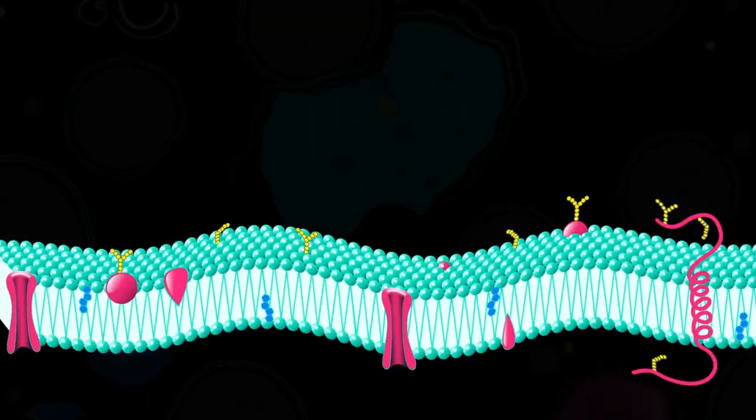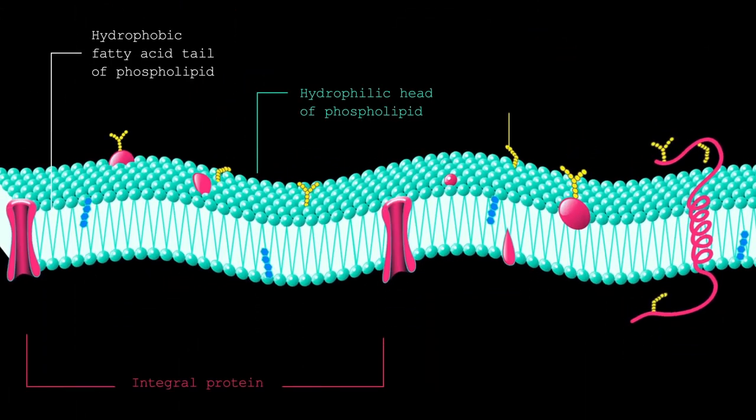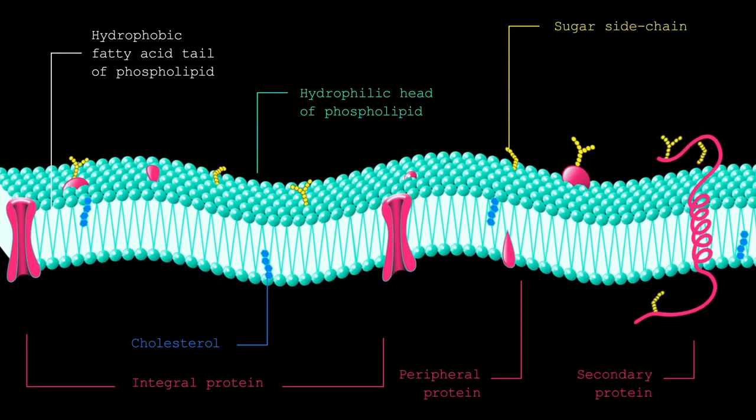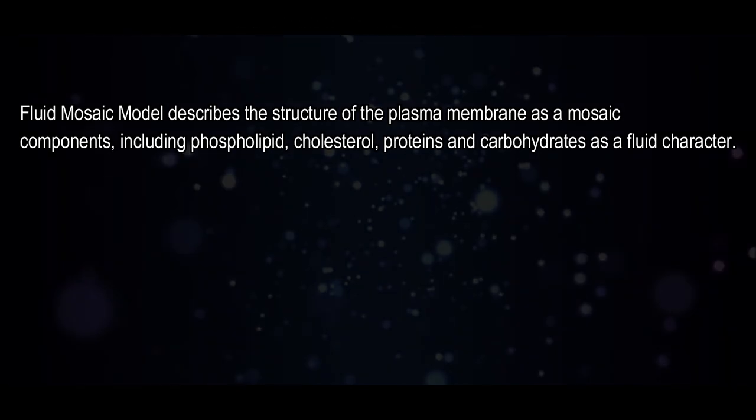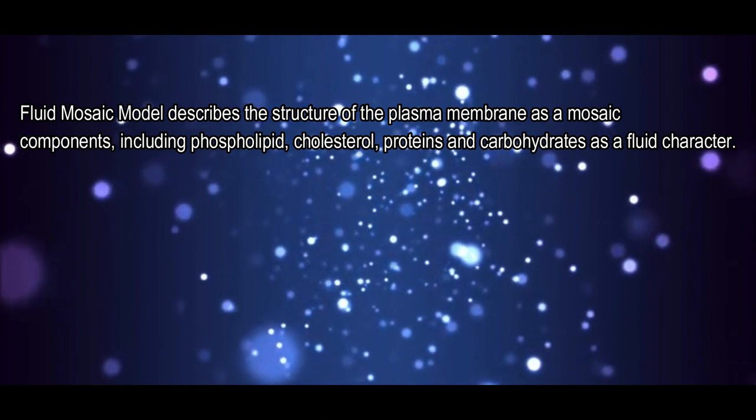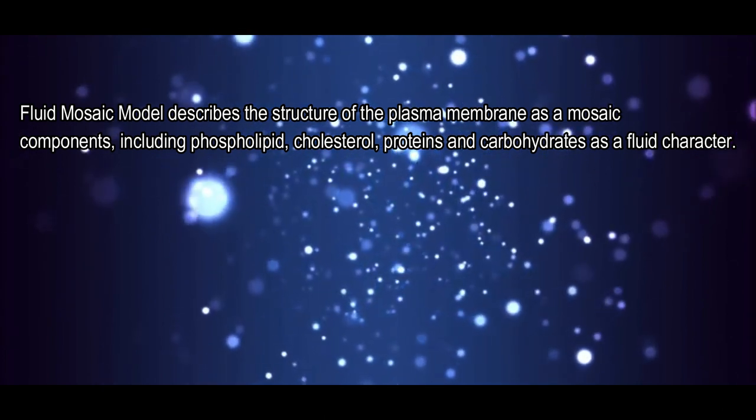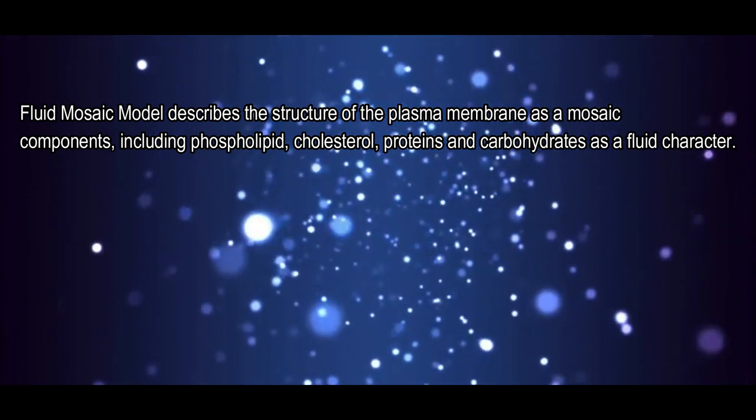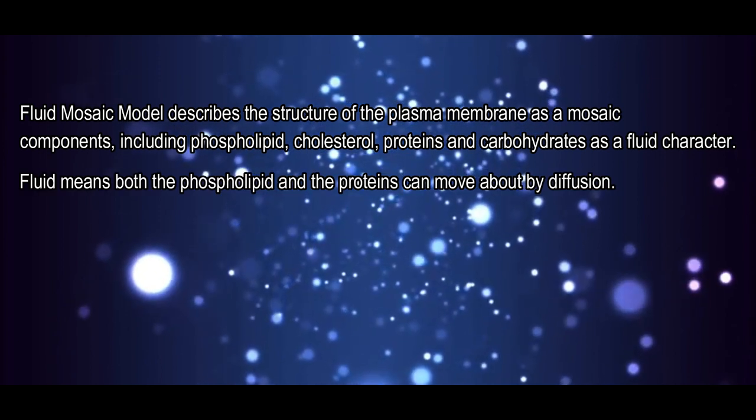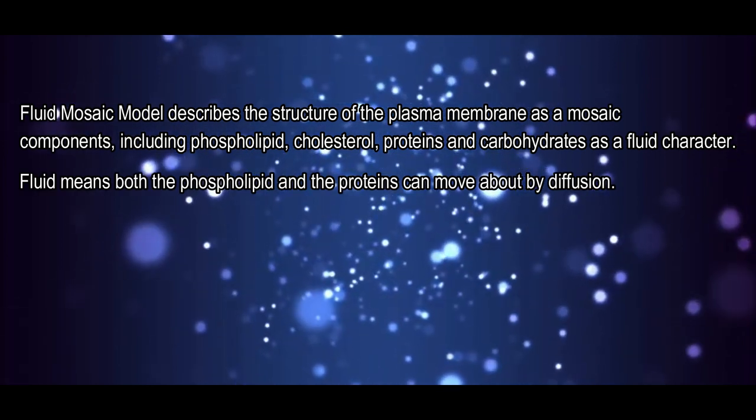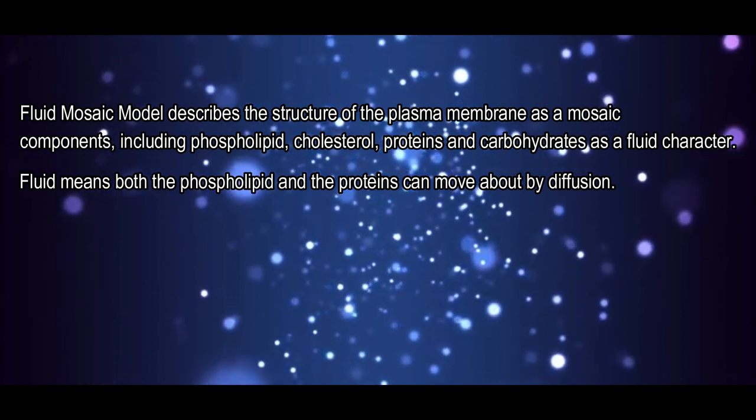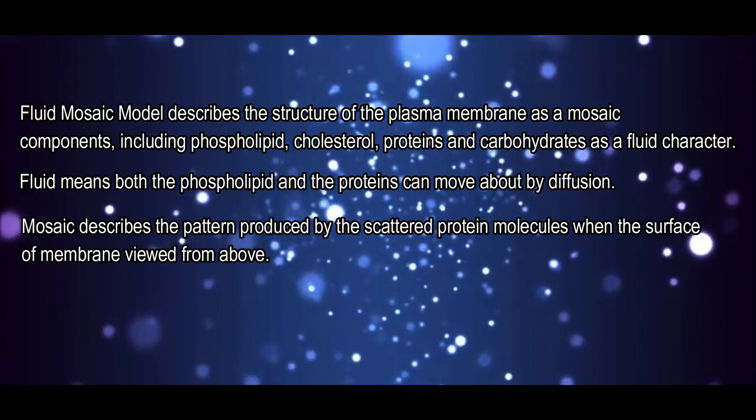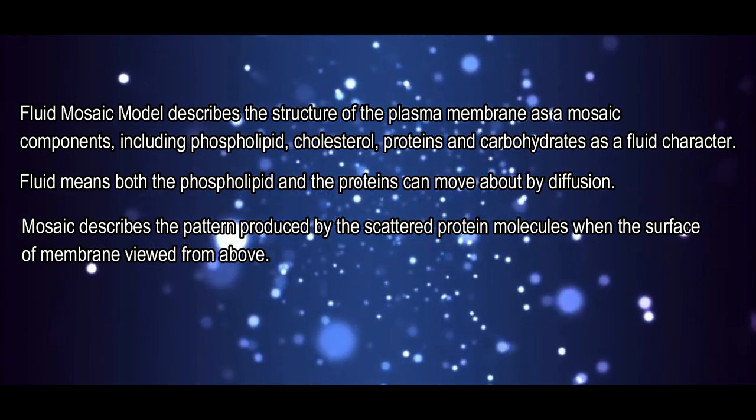The cell membrane gets this resilience, flexibility, and functionality by combining a variety of fluid components in what biologists call a fluid mosaic. The fluid mosaic model describes the structure of a plasma membrane as a mosaic of components, including phospholipids, cholesterol, proteins, and carbohydrates with fluid characteristics. Fluid means both the phospholipids and proteins can move about by diffusion. Mosaic describes the pattern produced by the scattered protein molecules when the surface of the membrane is viewed from above.